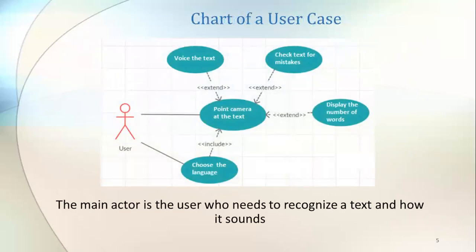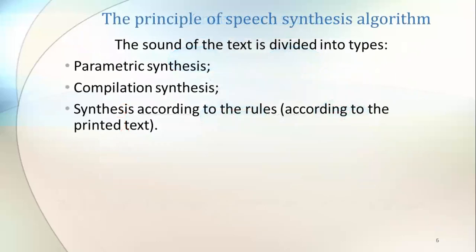Here on the slide you can see that the main actor is the user who needs to recognize a text and hear how it sounds. To implement text sound, the best method for software development must be analyzed. The sound of text is divided into types: parametric synthesis, compilation synthesis, synthesis according to rules, or according to printed text. Language recognition technology uses recorded segments of natural language, though developers still have difficulty creating perfect language synthesis.